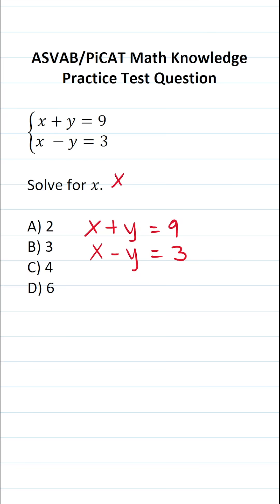Again, we want to get x equal to something by itself. Well, in this case, the only thing we really have to do to get x by itself is to add the two equations together.